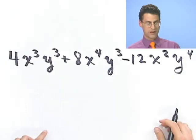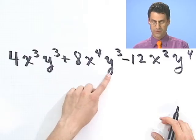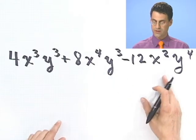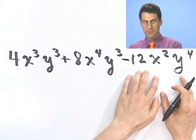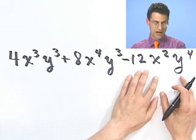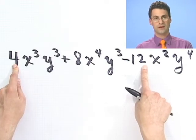So here's an example. Look at this polynomial. 4x³y³ + 8x⁴y³ - 12x²y⁴. Well, notice there is so much stuff that each of these monomial terms individually have in common. For example, they all have even coefficients. In fact, you can pull out a 4 from everybody.